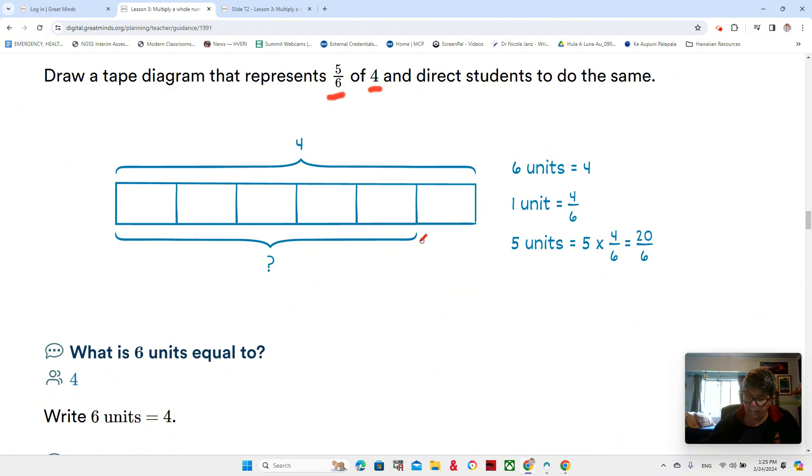Five-sixths of four. I have a total of four. I'm looking at a tape diagram instead of a number line. Let's see how they are the same and how they are different. I have a total of four, so I'm going to show that in my tape diagram. This represents four pizzas.